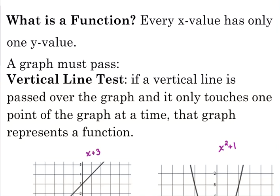Based on that definition, that every x value has only one y value, that is why the vertical line test works. If a vertical line is passed over the graph and it only touches one point in the graph at a time, that graph represents a function.